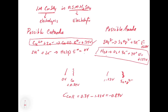That covers an introduction to electrolytic cells and electroplating. In the next video, we're going to look at how we can use stoichiometry and relate that to electrolysis — specifically, how many moles of product we produce based on the amount of charge that's passed.